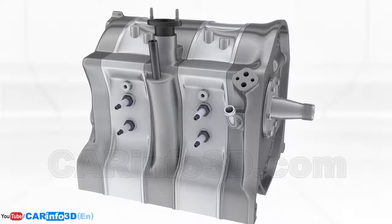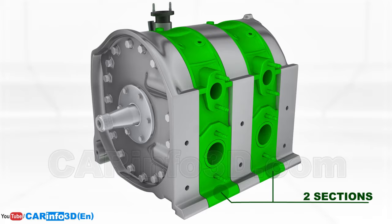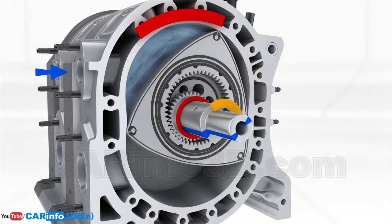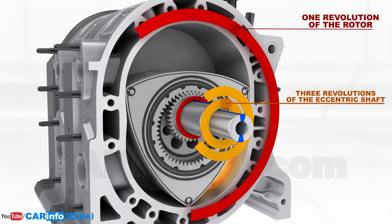A ring of long bolts holds the engine together. This is a two-section rotary engine, meaning it has two rotors. The engine's operation cycle consists of four strokes that take one revolution of the rotor, or three revolutions of the eccentric shaft.